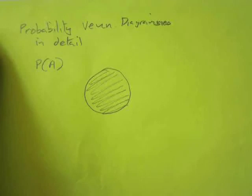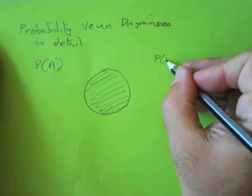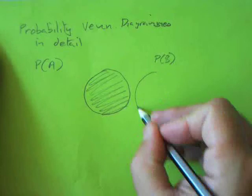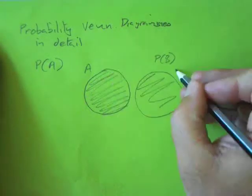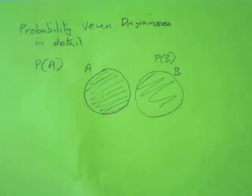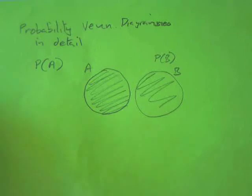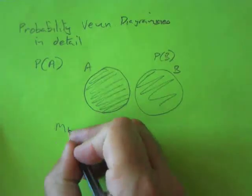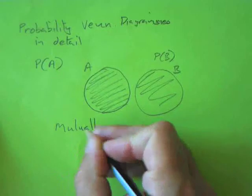So I've got circle A and I've got circle B. Is there anybody who can be in both A and B at the same time, according to the picture in front of you? No, there's no crossover. So we call this mutually exclusive.